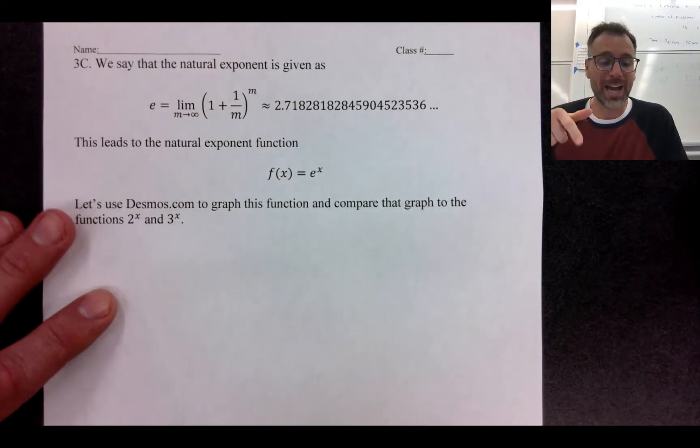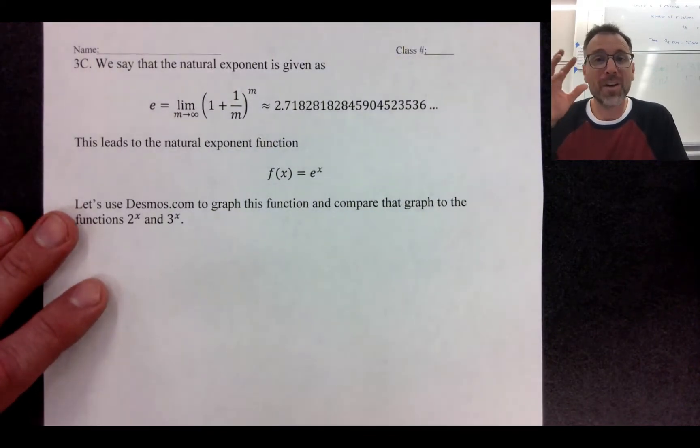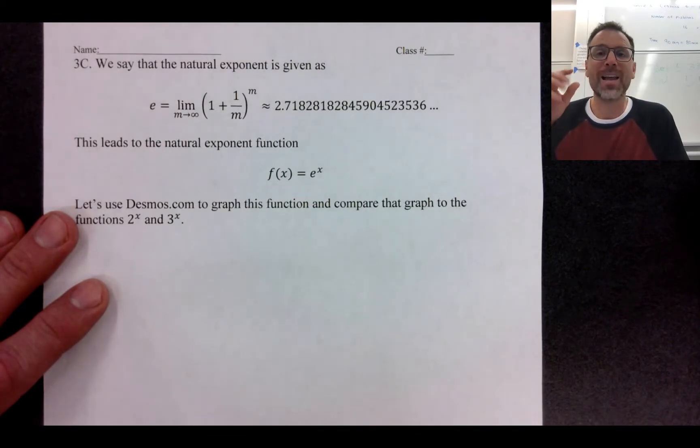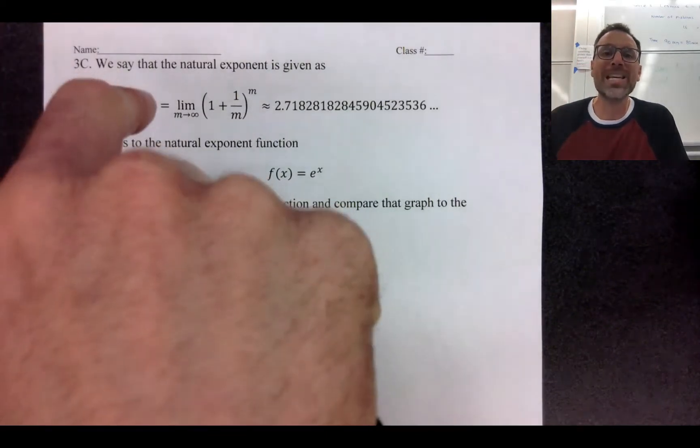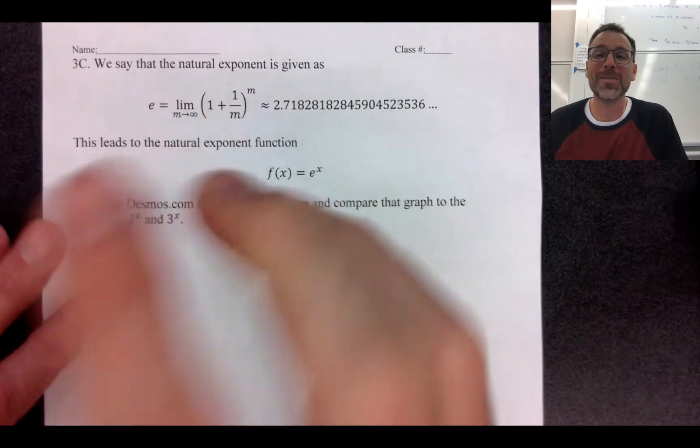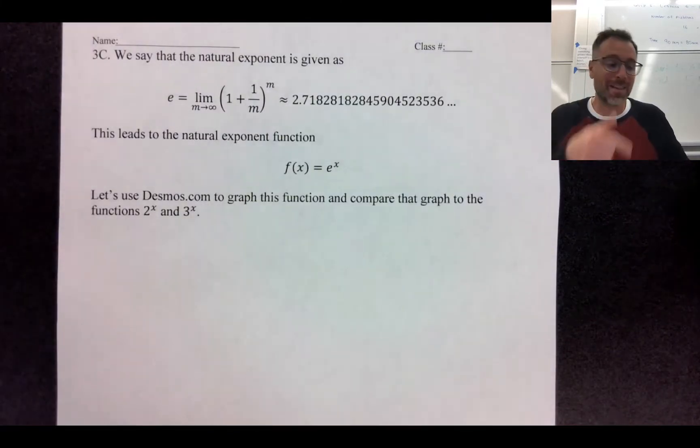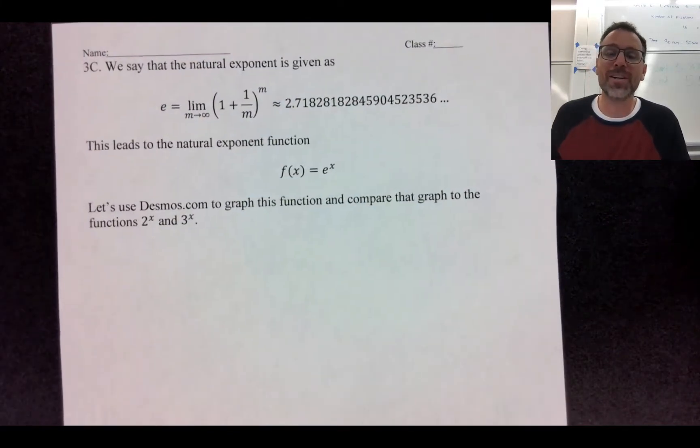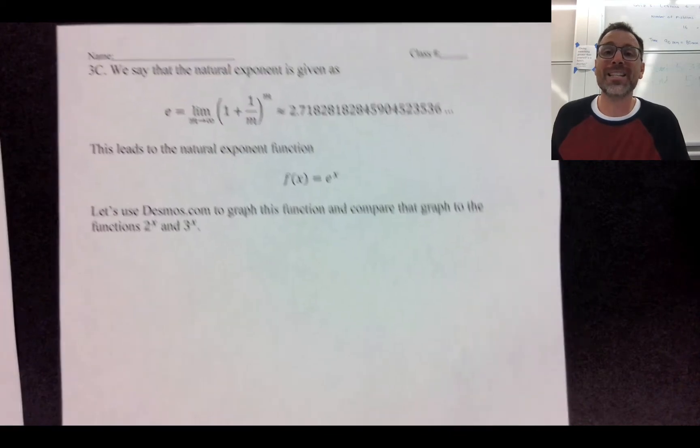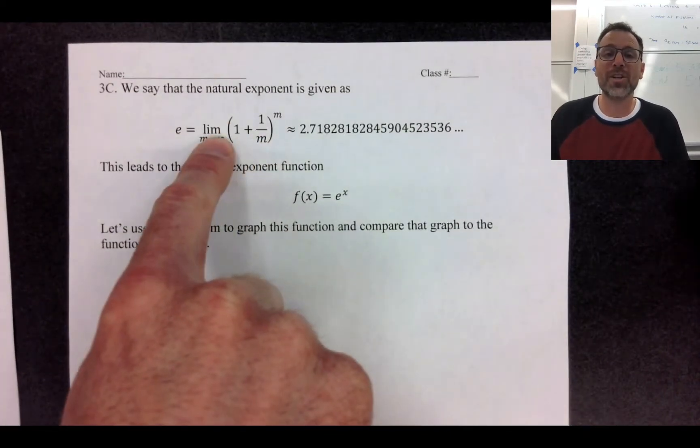In this situation we're going to actually generate a kind of thought experiment that allows us to see how the number E is related to compounding periods. So specifically we're going to build on that last video where we were talking about compounded interest with a thought example to show where this definition comes up.